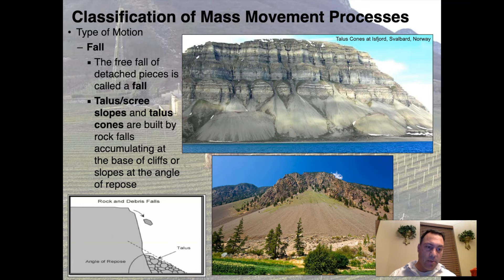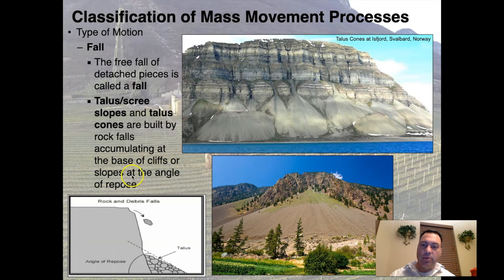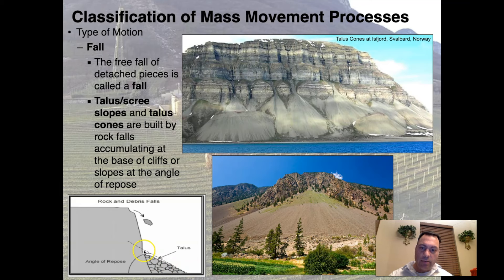Now let's get into the types of motion. A fall is the free fall of detached pieces of rock. Talus cones — like the ones seen here in Norway — are built by rock falls accumulating at the base of cliffs at the angle of repose. Here's a diagram: you have a cliff, the unstable face above, and any material that falls accumulates down below in a talus pile that takes on the angle of repose, forming a beautiful uniform talus cone.